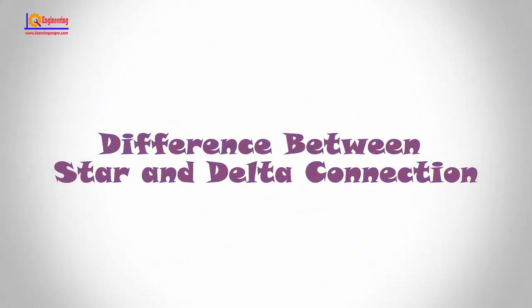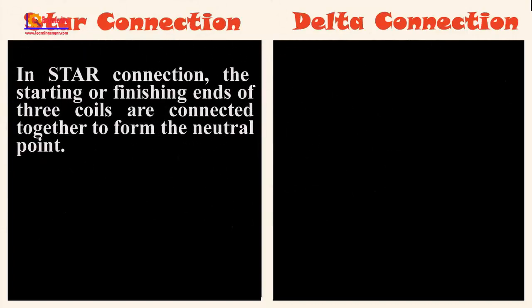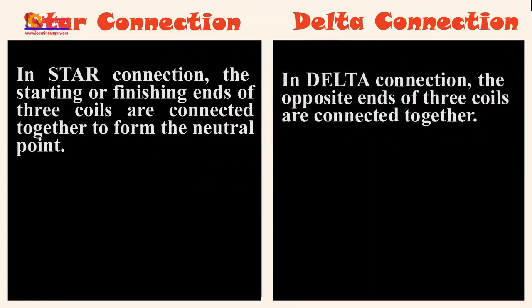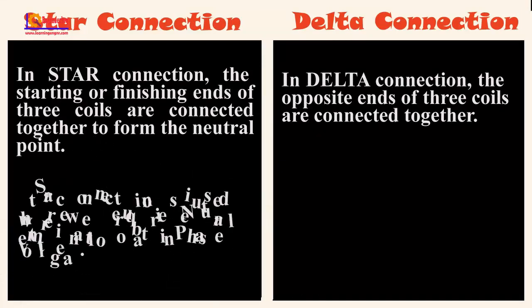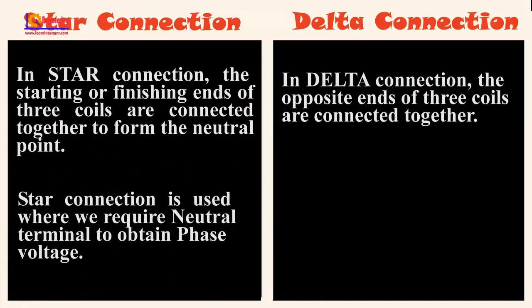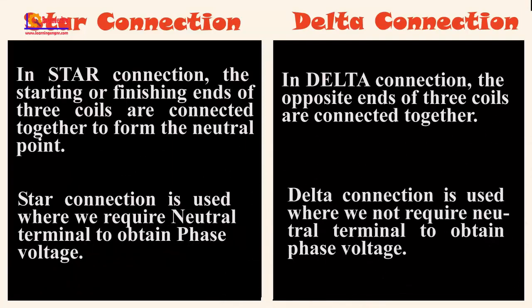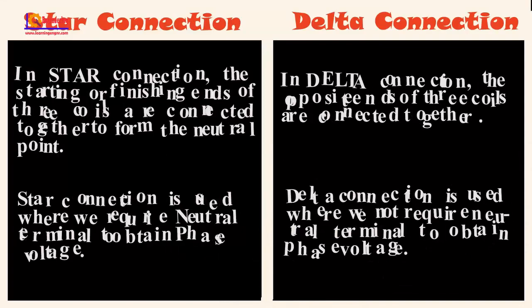In star connection, the starting and finishing ends of three coils are connected together to form the neutral point. In delta connection, the opposite ends of three coils are connected together. Star connection is used where we require a neutral terminal to obtain phase voltage; delta connection is used where we do not require a neutral terminal to obtain phase voltage.